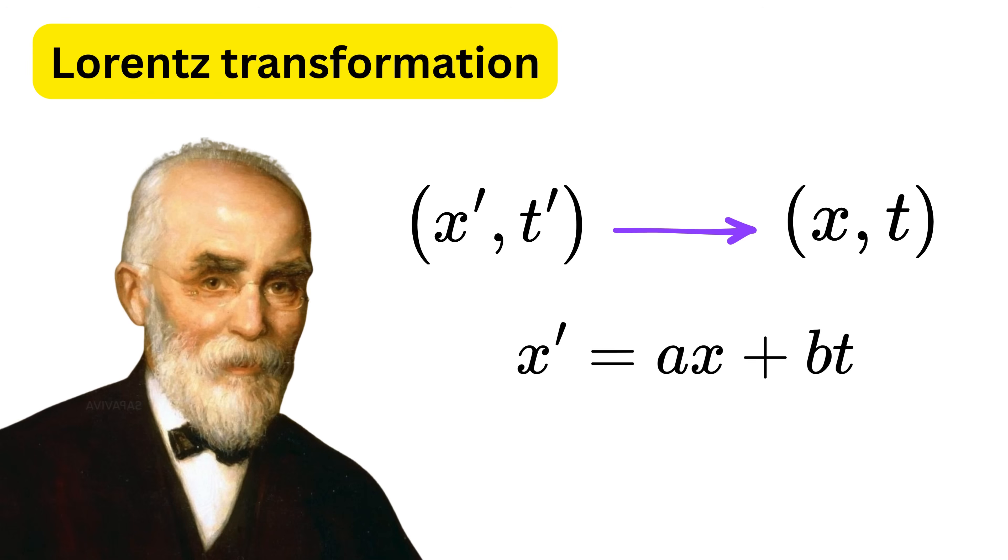Unlike Galilean transforms, Lorentz transforms change both position and time. So it's like both x prime and t prime are now dependent on both x and t, which means x prime equals a times x plus b times t and t prime equals p times x plus q times t.